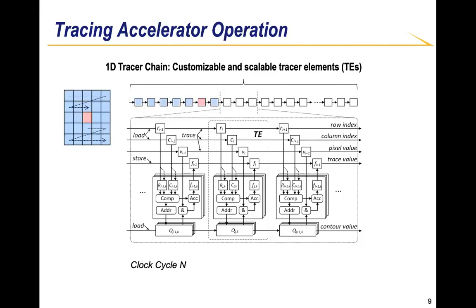This figure gives an example of operation for the Tracing Accelerator. Assuming at clock cycle N, a sequence of input data has been fed into the Tracing Accelerator. At clock cycle N plus 1, the pipeline moves forward. The input data includes the row and column indices and the intensity value of a pixel. The pipeline moves one step forward per clock cycle. Within each clock cycle, every tracing element compares the input row and column indices against the preloaded cell centers. If it finds the input pixel falls inside the cell contour, the local trace register updates its value by accumulating the input pixel intensity. Otherwise, the trace register keeps unchanged.